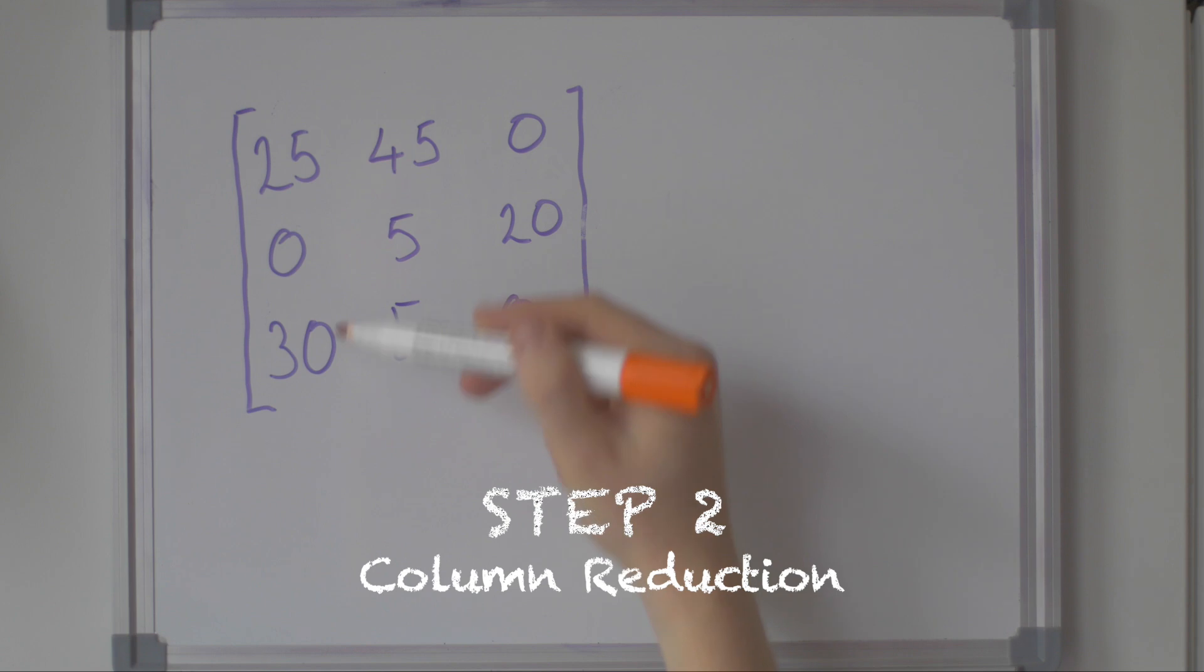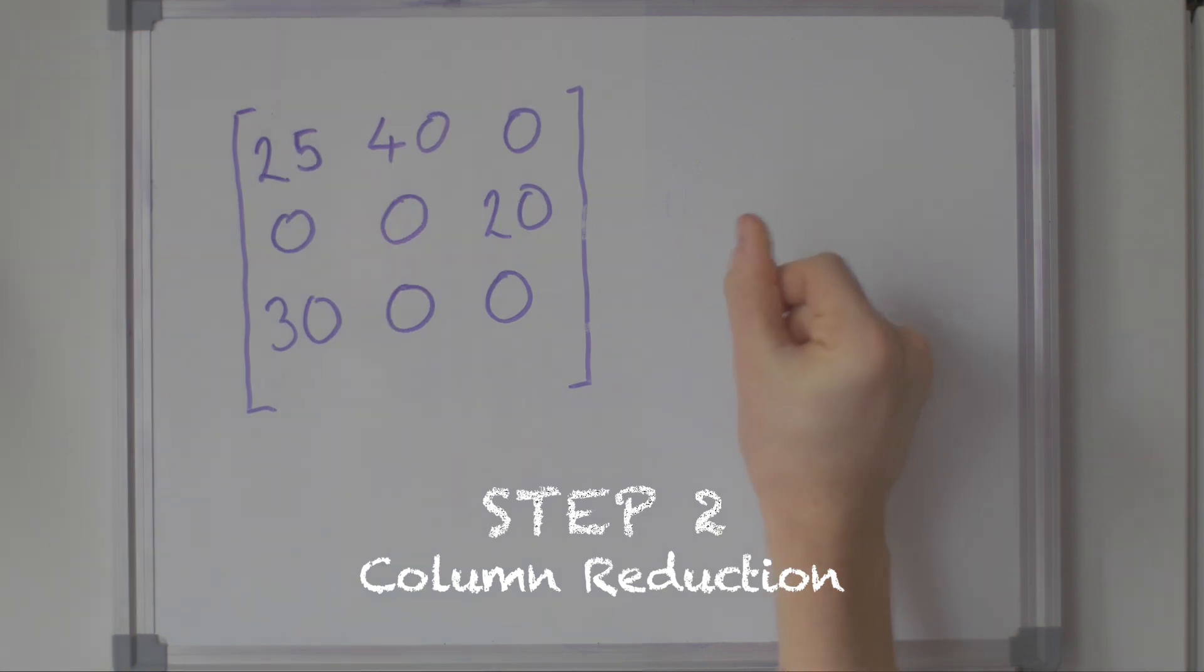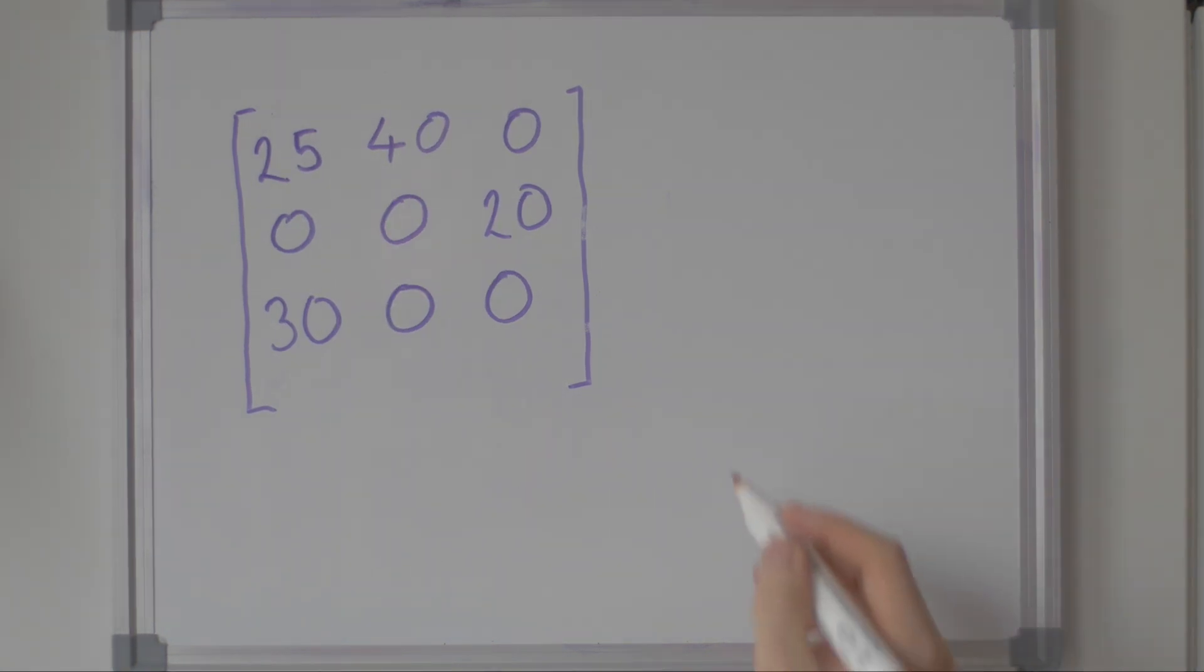We're now going to repeat step one, but on the columns rather than the rows. First, find the minimum of each column. Then, subtract each column's minimum from every value in that column. This means that each column now contains at least one zero.